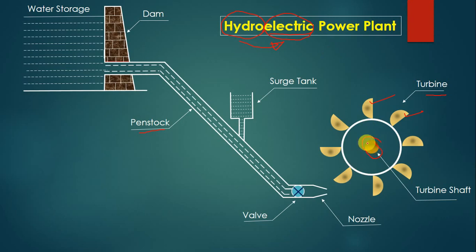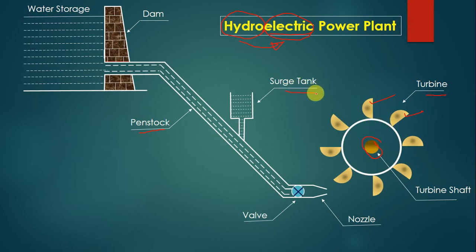After the shaft there is an electrical generator. The function of the electrical generator is to convert mechanical energy into electrical energy. The generator is not shown in the diagram, but the shaft is connected to it. The generator takes mechanical energy as input and gives electrical energy as output. There is also one more part called the surge tank, whose function we will see later.